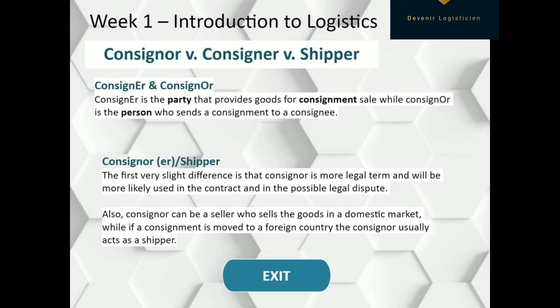What is the difference between consignor with O and consignor with E? Consignor with O is the person who sends a consignment to a consignee, while consignor with E is usually considered a party that provides goods for consignment sale. And what's the difference between a consignor and shipper? They are practically the same — the person who sends the shipment or consignment by any means of transport. Consignor is a more legal term used in contracts and legal disputes. Also, consignor can be a seller in a domestic market, while if a consignment is moved to a foreign country, the consignor usually acts as a shipper. But you can use both words interchangeably, since practically they mean the same.